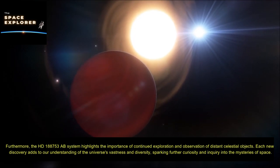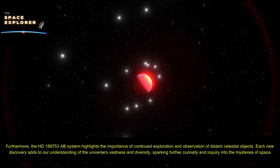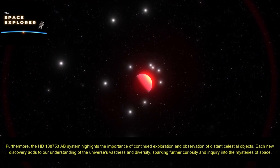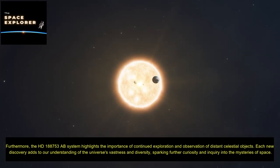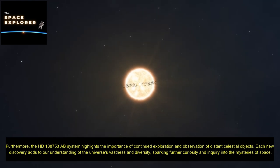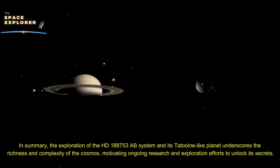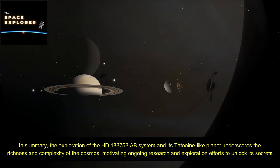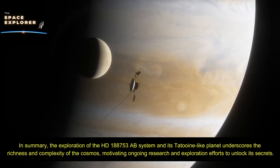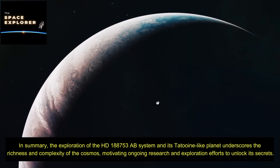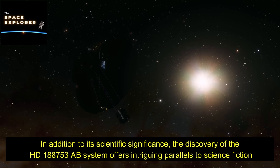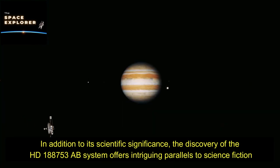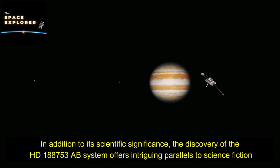Furthermore, the HD 188753 AB system highlights the importance of continued exploration and observation of distant celestial objects. Each new discovery adds to our understanding of the universe's vastness and diversity, sparking further curiosity and inquiry into the mysteries of space. In summary, the exploration of the HD 188753 AB system and its Tatooine-like planet underscores the richness and complexity of the cosmos, motivating ongoing research and exploration efforts to unlock its secrets. In addition to its scientific significance, the discovery of the HD 188753 AB system offers intriguing parallels to science fiction.